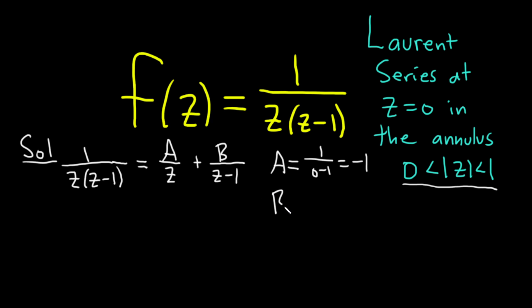And to find B, you cover up what's under B and say, what makes that 0? 1. So you cover this up and plug in 1. So 1.